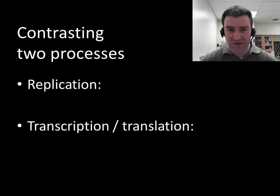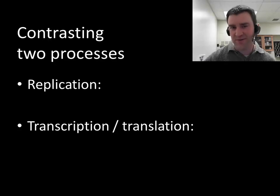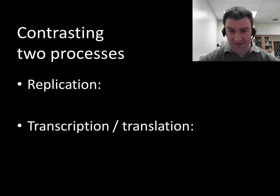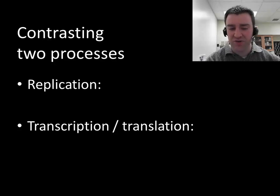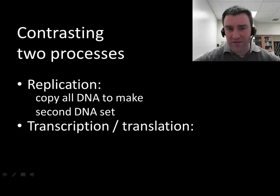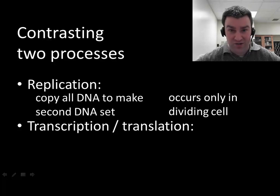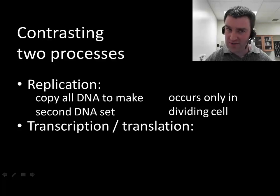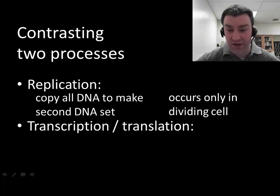Before we do that, I just want to make sure we're absolutely clear. Since I tend to cover replication very close to the time that I cover transcription and translation, I want to make sure that you can keep those processes separate, because they really are very different processes and they aren't like sub-steps of each other. Replication really only occurs when we want to copy all of the DNA in a cell and make a second copy, really for the purposes of making a new cell eventually. Replication would only occur in a cell that wants to divide.